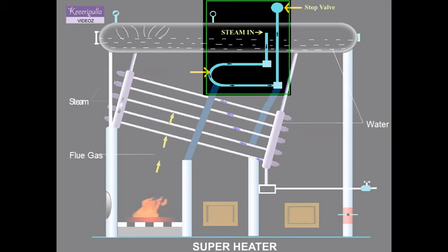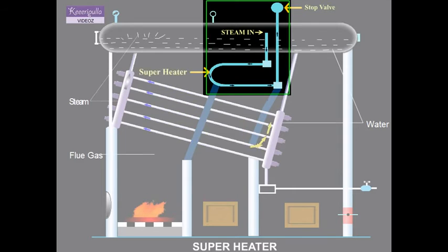The superheater is located just before the gases enter the bottom flue tube.